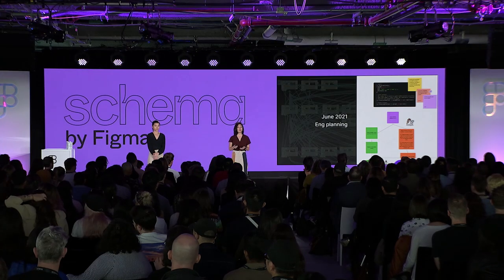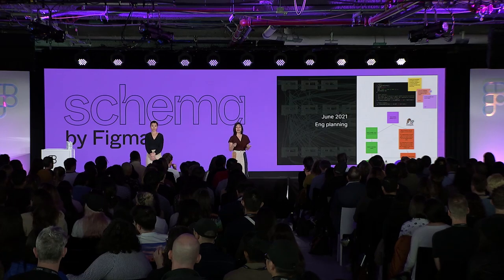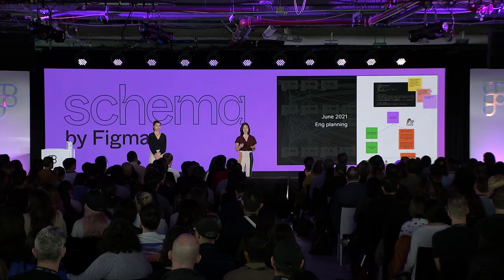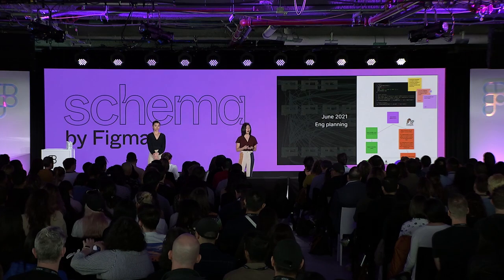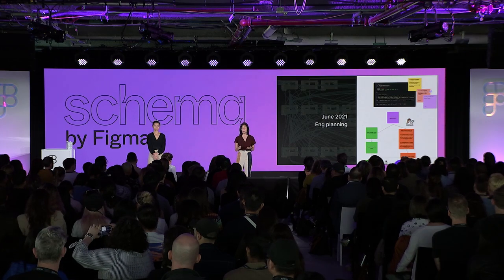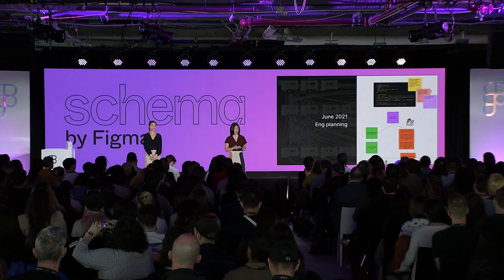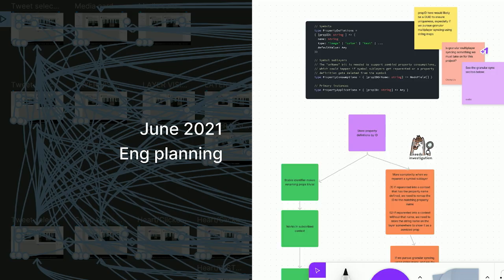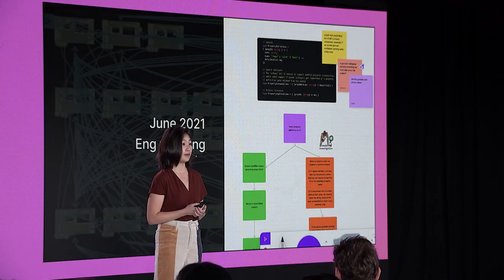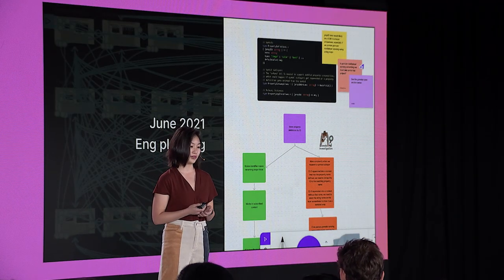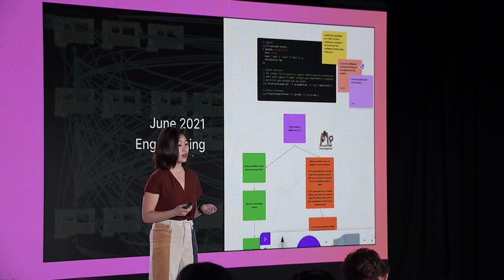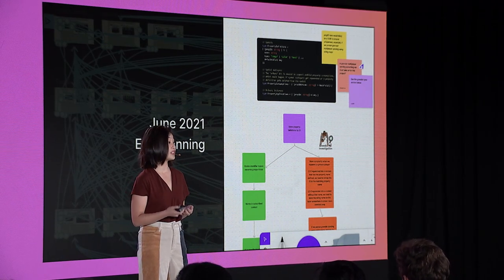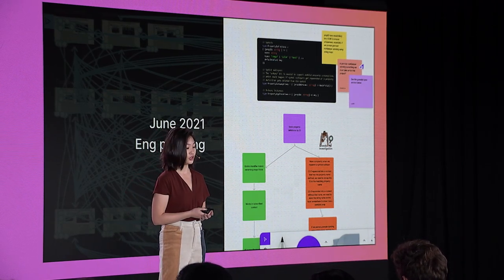In June, we started engineering planning. We wanted to be really deliberate about making smart choices to handle the many edge cases that come up when dealing with components and instances. We spent a lot of time planning out how to build this feature, and we also wanted to make sure that the data model was extensible should we want to build on top of it in the future.